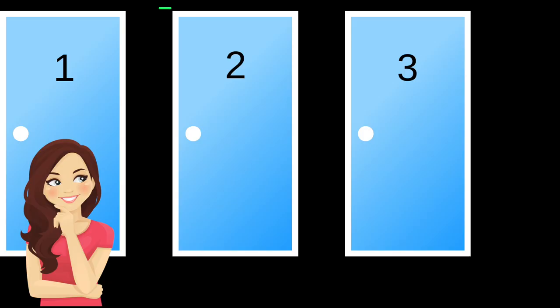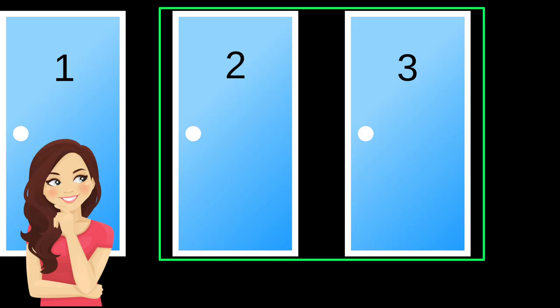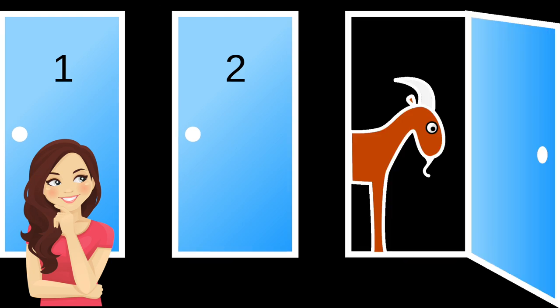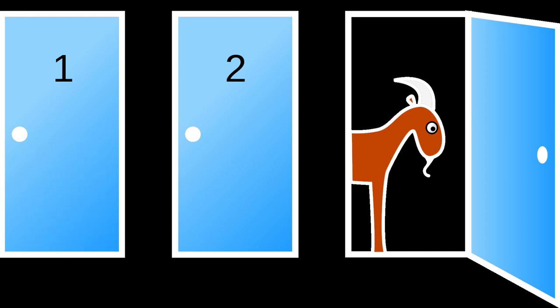But before we explain why, let's go over some of the observations and assumptions that underpin this problem. First, the host always chooses a door different from the one chosen by the player. Second, the host always chooses a door with a goat. Finally, the prizes are not shuffled between door selections. This last point is the most important, as it implies that the selections are not independent events like flipping coins or rolling dice, but rather a single event.